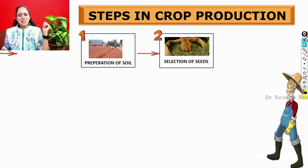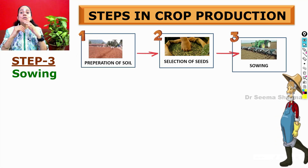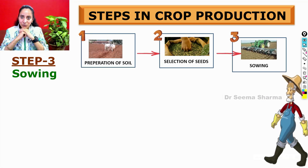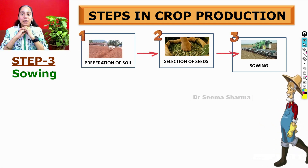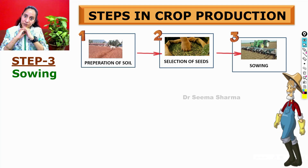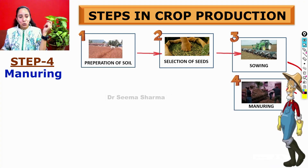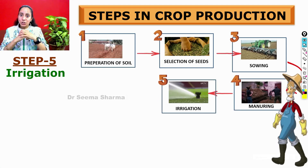After selecting seed, you will go for sowing. Sowing is the process of placing seeds into the field. The fourth step is manuring, and the fifth step is irrigation.